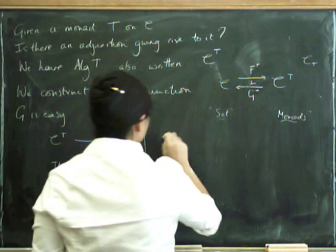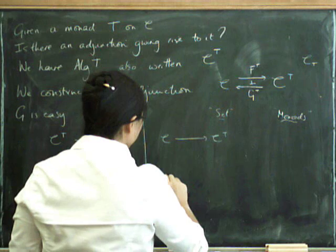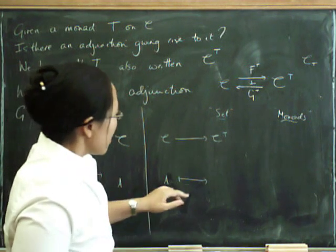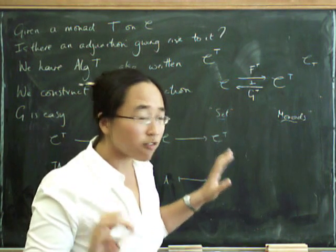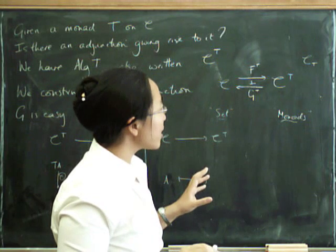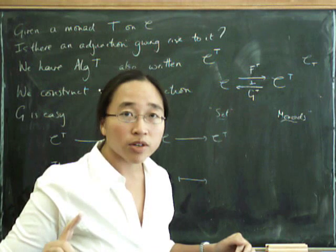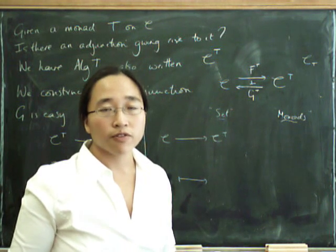On the other hand, how are we going to make the free thing? If we start with an object A, what can we make as an algebra here? We're going to express it as an underlying object together with an action. Let's think about the monoid example. How do you make the free monoid? We want to express the free monoid as an algebra for T. What's the underlying set of the free monoid on A?